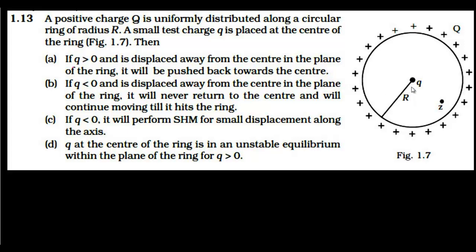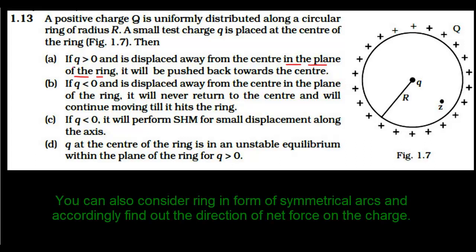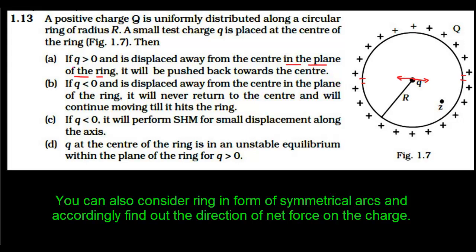In option A, if the charge q is positive and is displaced away from the center in the plane of the ring, it will be pushed back towards the center. The ring is made up of very small elements, each positively charged. These elements push the charge, and the net force is zero when it is at the center.